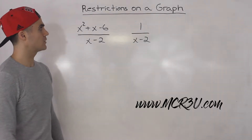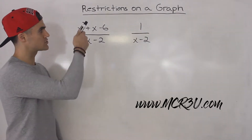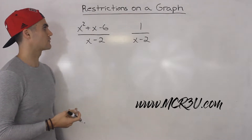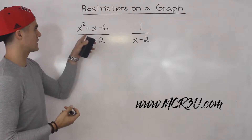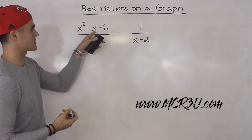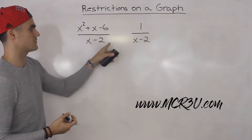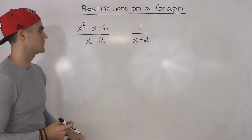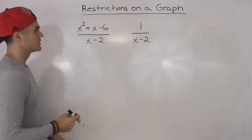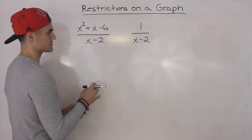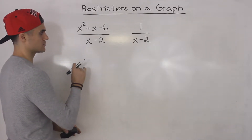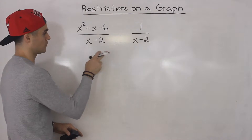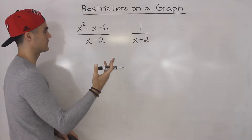In this video I want to talk about how restrictions look on a graph. I got two examples here: x squared plus x minus 6 over x minus 2, and then 1 over x minus 2. So let's say that we were asked to state the restrictions for both of these, or maybe even the domain.